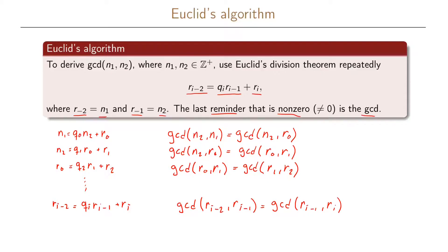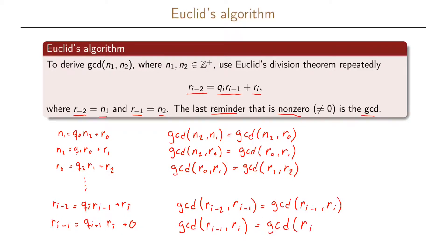In the last step, we have r_{i-1} equals q_{i+1} times r_i plus 0, where the remainder is zero. Here we use that the GCD of r_{i-1} and r_i equals the GCD of r_i and 0, which equals r_i. So the last remainder that is non-zero is the greatest common divisor.